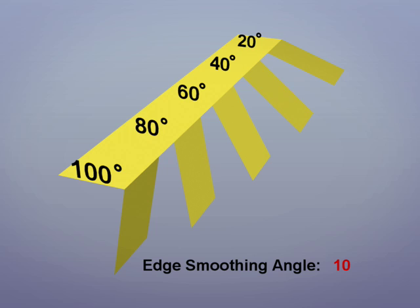However, if we bump this smoothing angle up to thirty, the twenty degree angle becomes smooth. Going to a smooth angle of fifty, both the forty degree and twenty degree angles are smoothed.